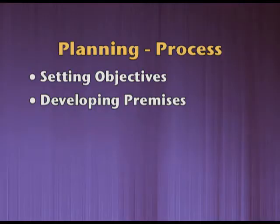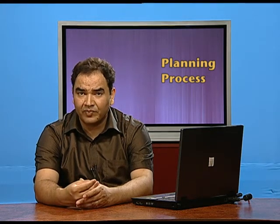At the third step, we have the search for alternative courses of action. Once the objective is set — say our profit should be 30 percent compared to 20 percent last year — we look for alternatives. For example: number one, we may increase the price of the existing product; number two, we can import machines which can produce things very quickly; and thirdly, we can use our waste resources in the manufacturing of stuffed toys.